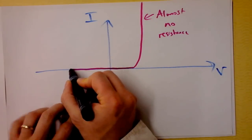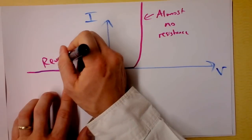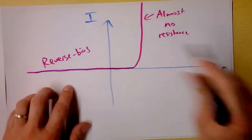you're going to get no current because it's reversed biased over here. Reverse bias over this direction.